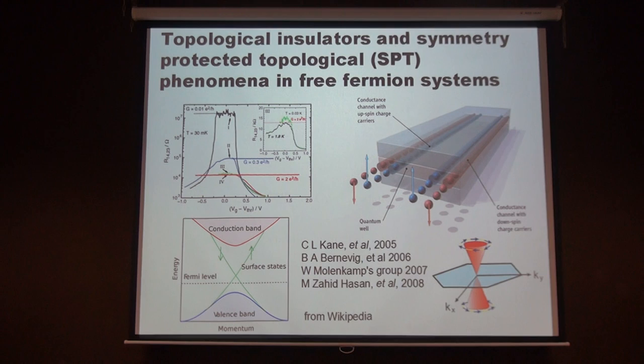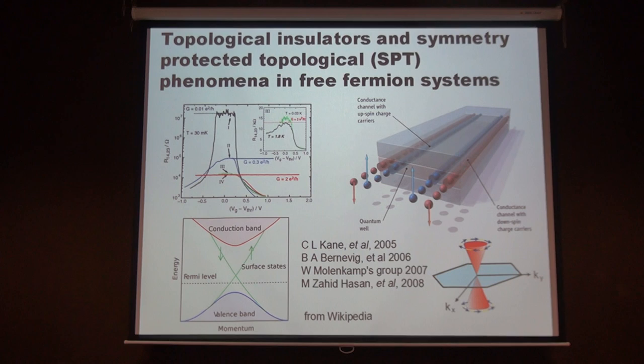We start from the free fermion system, and in both two plus one and three plus one dimensions in electronic materials, it is relatively easy to find this kind of non-trivial symmetry-protected topological phases. For free fermion systems the underlying idea is very simple: if we think about a free fermion system with some surface state, and if the surface state carries some Kramers doublet, then we can just use time reversal symmetry to protect it.